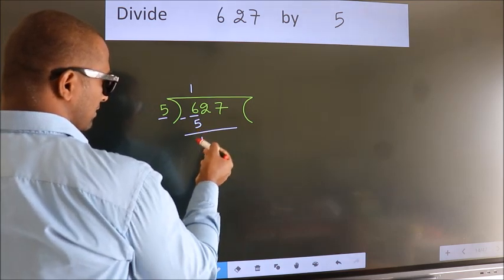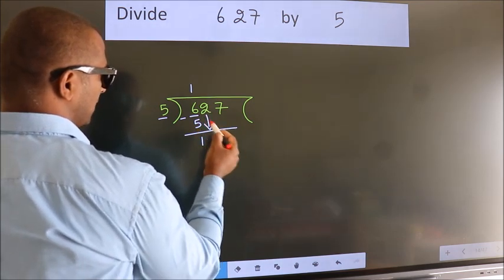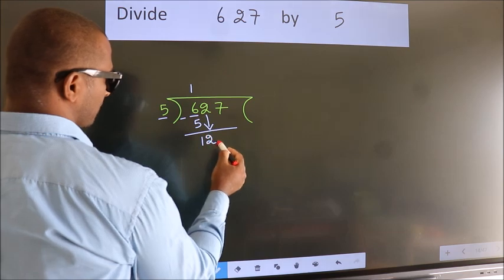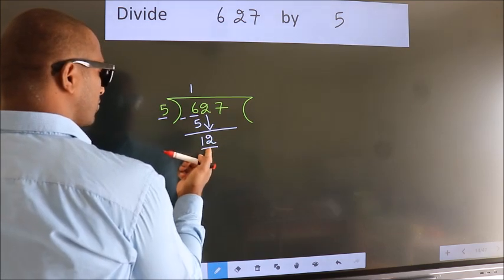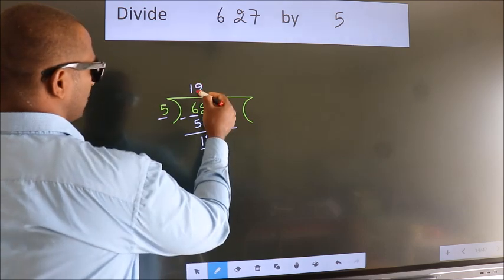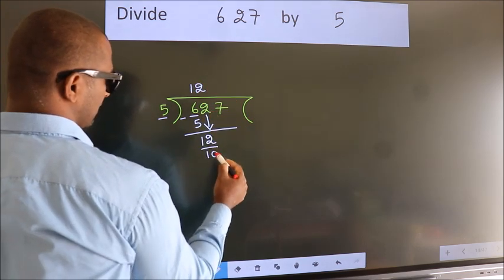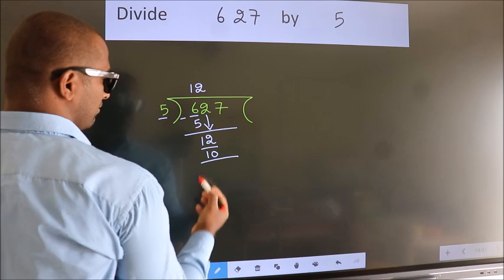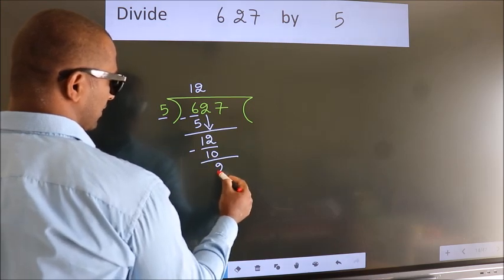After this, bring down the beside number. So 2 down, so 12. A number close to 12 in 5 table is 5 twos 10. Now we subtract. We get 2.